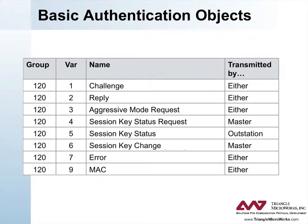There are eight new objects defined for use with basic authentication. All objects except those related to key exchange can be sent by either the master or the outstation. A challenge message is sent by a receiver to indicate that the previously transmitted message must be authenticated. The challenger supplies data to be included in the authentication calculation. A reply message contains the MAC used to authenticate a message. An aggressive mode request and a MAC object, HMAC or GMAC, are included at the start and end of a DNP3 fragment respectively, to authenticate a message without exchanging a challenge and reply.